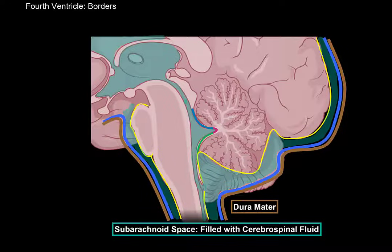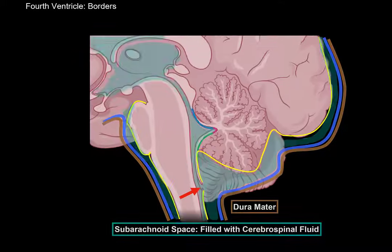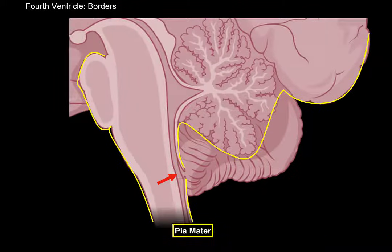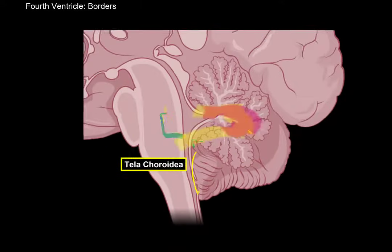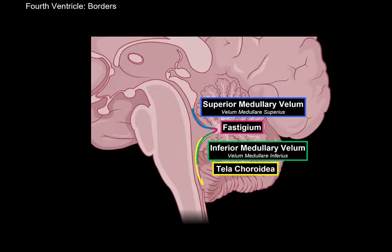Cerebrospinal fluid is found in the subarachnoid space and in the ventricles and canals of the central nervous system. At the fourth ventricle, there are apertures through which cerebrospinal fluid flows from the ventricular system into the subarachnoid space. The pia mater terminates at this aperture and forms a membrane called the tela choroidea, which loops to the inside of the inferior medullary velum. Another structure found here — present in all ventricles — is the choroid plexus, which is highly vascular and produces the cerebrospinal fluid.